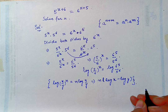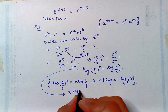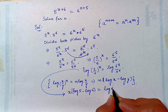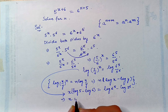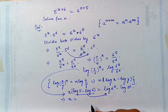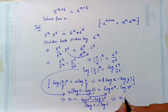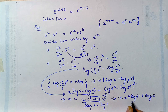So we can write it as x into log 5 minus log 6 is equal to log 6 raised to power 5 minus log 5 raised to power 6. We can shift log 5 minus log 6 to the right-hand side. So x is equal to log 6 raised to power 5 minus log 5 raised to power 6, upon log 5 minus log 6. This is equal to x equals 5 log 6 minus 6 log 5, upon log 5 minus log 6.